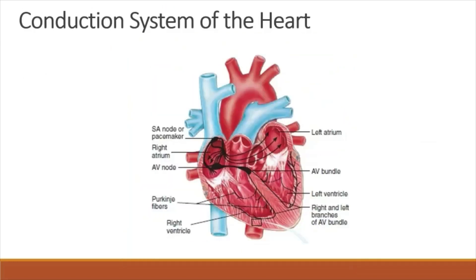The conduction system of the heart is a network of specialized autorhythmic cardiac muscle cells that initiate and coordinate contraction of the heart muscle, so cardiac muscles contract and relax without any signal from the nervous system. The main parts of the heart conduction system are the sinoatrial node (SA node), atrioventricular node (AV node), atrioventricular bundle (AV bundle), right and left bundle branches, and Purkinje fibers.